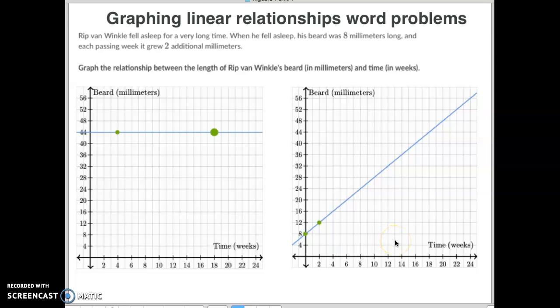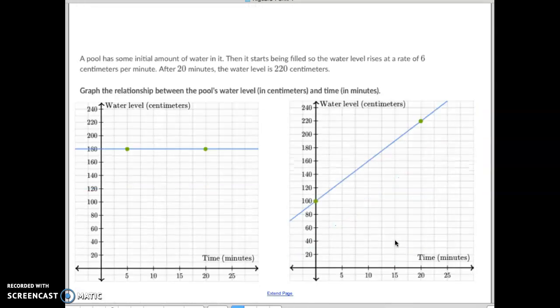All right, that should make sense. Let's go on to our last little example here. A pool has some initial water amount in it and it starts to begin to get filled at a rate of 6 centimeters per minute. Well, you really can't graph 6 centimeters until we know where it started or where it ended or at some point. After 20 minutes, the water level is at 220 centimeters.